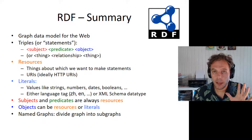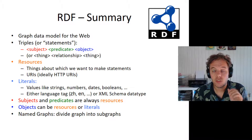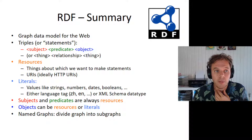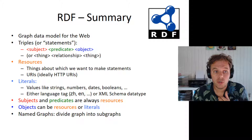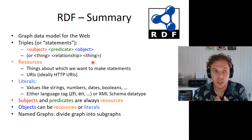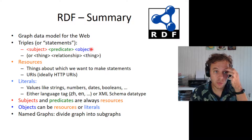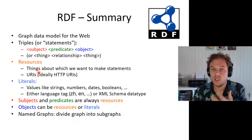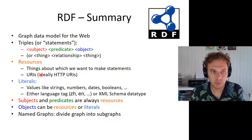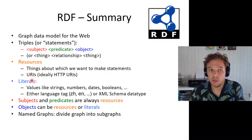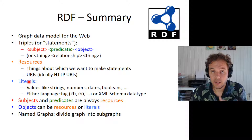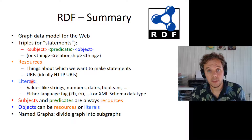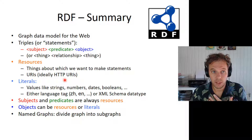As a reminder, we talked about RDF — this standardized way of representing data on the web. It's a graph data model and it uses triples to say things about the world: subject, predicate, object, or thing, relationship, thing. In the subject, object, and predicate positions we use things called resources — that's why it's called the Resource Description Framework. These are things we want to talk about and we denote them by URIs, globally unique URIs.